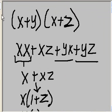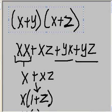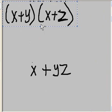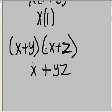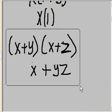So, whenever we have x OR y times x OR z, this will always give us x OR yz.